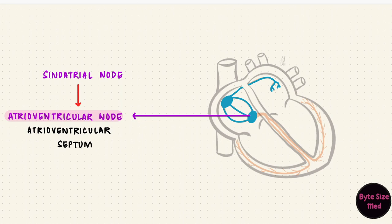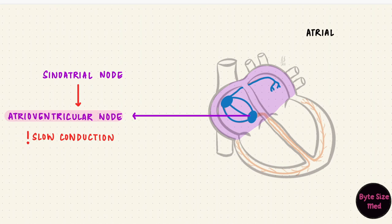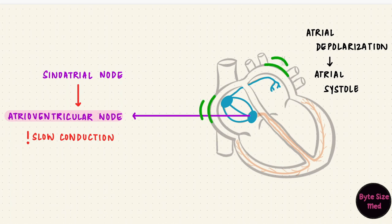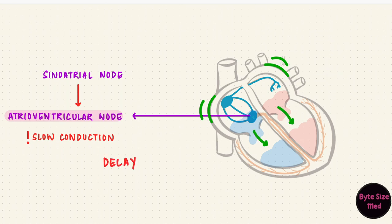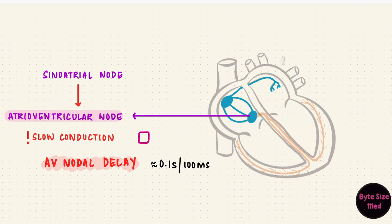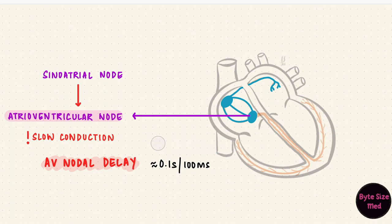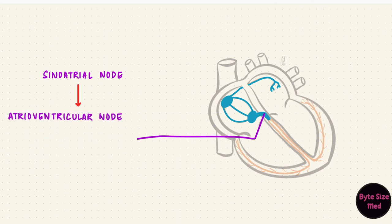Impulses don't pass through the AV node quickly — conduction through the AV node is slow. The purpose of atrial depolarization is to make the atria contract, which is atrial systole. Atrial systole pushes blood into the ventricles to complete ventricular filling. There is a delay in the AV node — called the AV nodal delay — of around 0.1 seconds (100 milliseconds), which allows filling to complete before the impulse reaches the ventricles. This is thought to result from fewer gap junctions and poor impulse conduction between cells of the AV node.